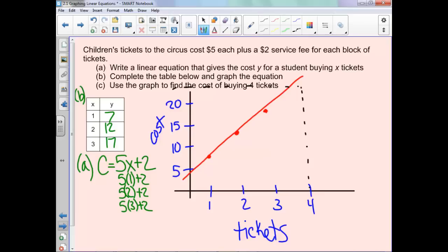If we estimate for 4 tickets, it's going to be about $23. So 4 tickets would be approximately $23. If we plugged 4 into our equation over here, notice we would get 5 times 4, which is 20, plus 2, so 22, which is close. So that's why we're estimating it with the graph.